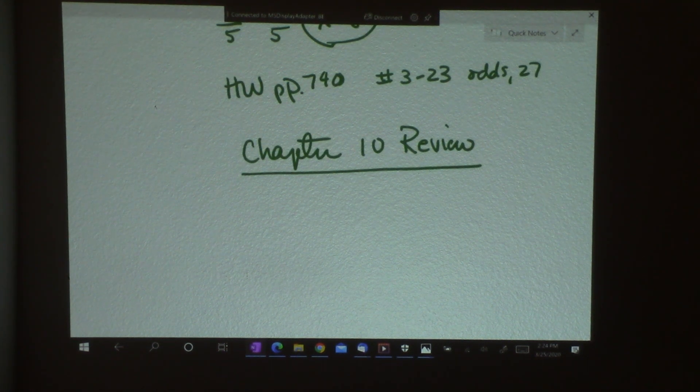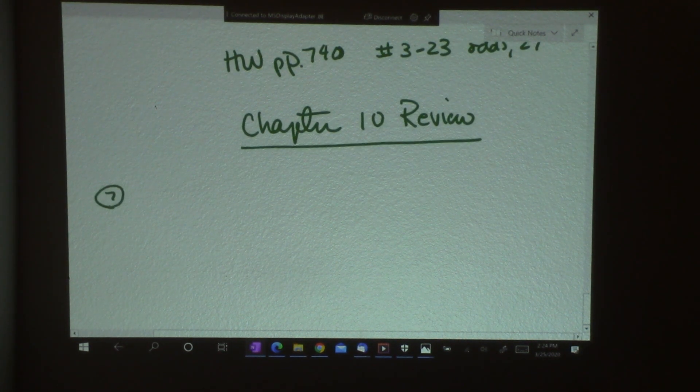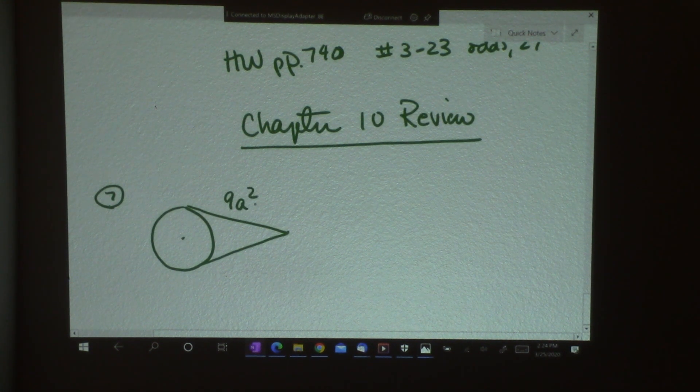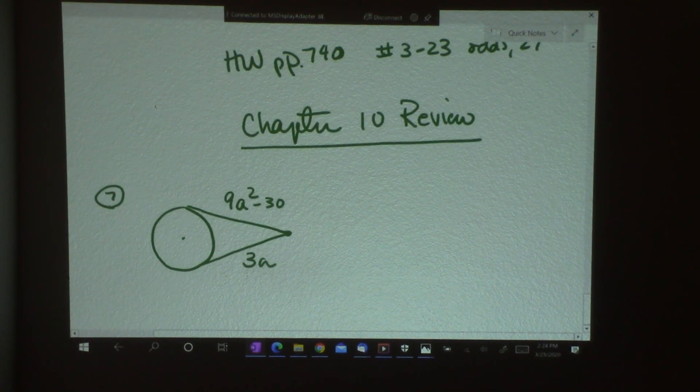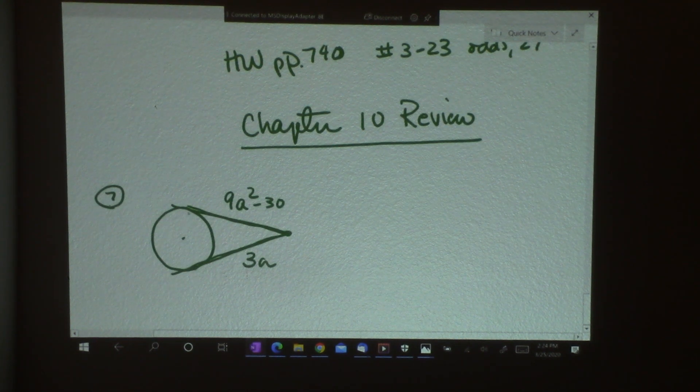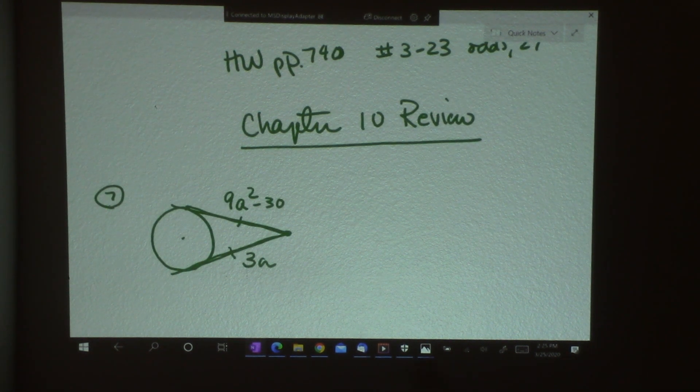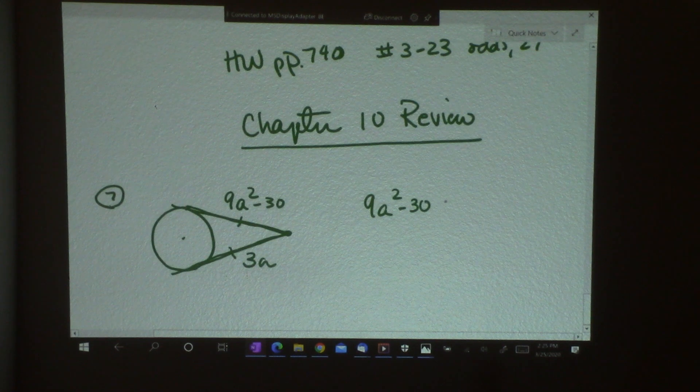Like many, many of you have in the past. So I'm going to do, actually I'll do two of them. Number 7 and number 9. So we have this picture here. And I know this is 9A squared minus 30. And this is 3A. Now, from this picture, I know with the theorems I was given that if I have a point out in space that connects to a circle as a tangent in two different places, those lengths are the same. And with those being the same, I can set up an equation to solve for A. So I have 9A squared minus 30 equals 3A.